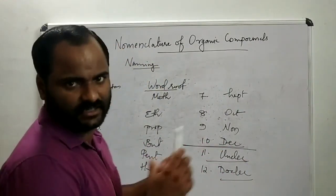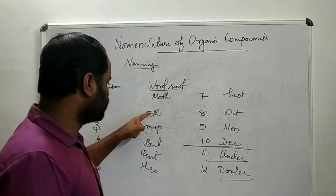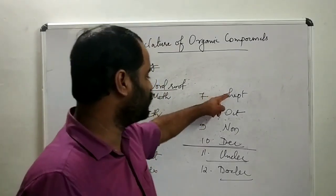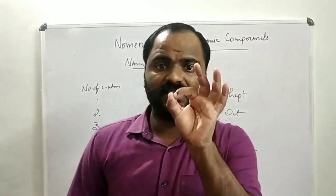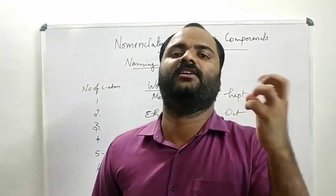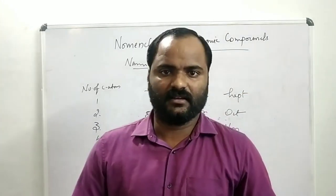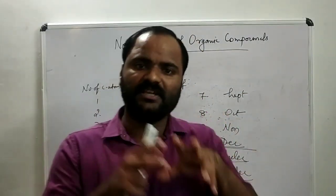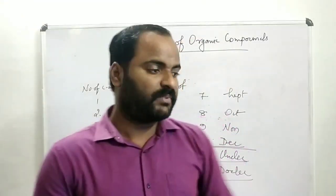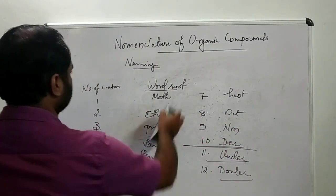You have to learn the first ten members — you have to memorize them anyway. So for one: meth; two: eth; three: prop; four: but; five: pent; six: hex; seven: hept; eight: oct; nine: non; ten: dec. This is the fundamental thing in naming, so please remember and memorize these word roots.